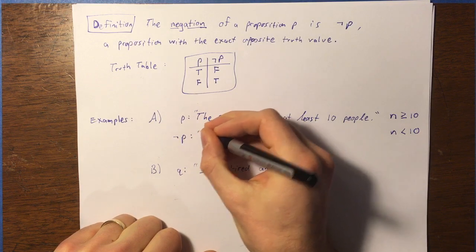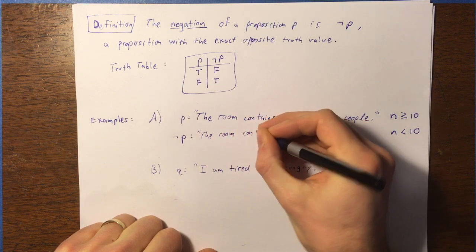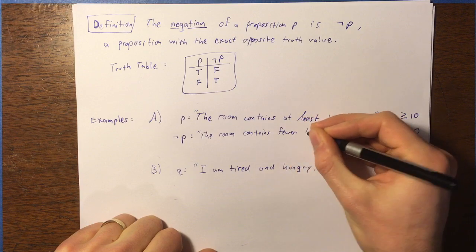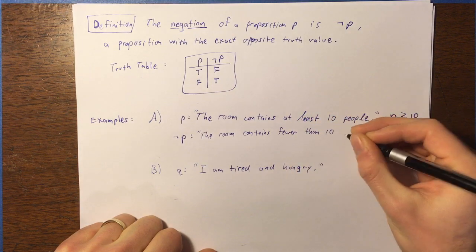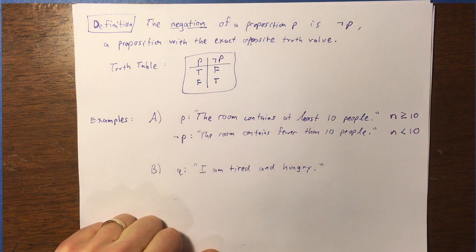And so the way we can describe that in words, not P, would be that the room contains, perhaps we could say, fewer than 10 people. And that's our negation.